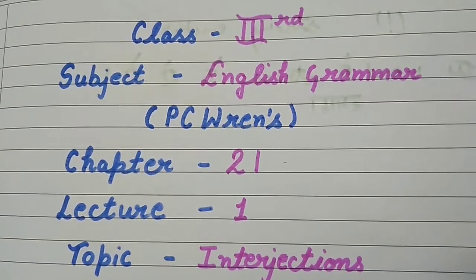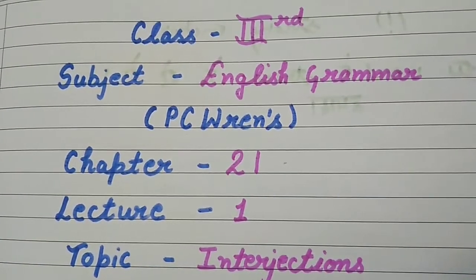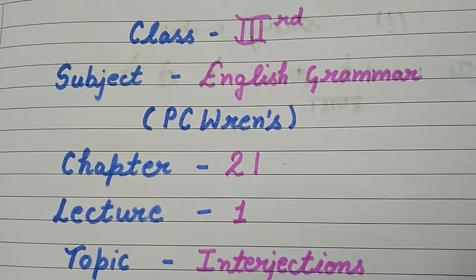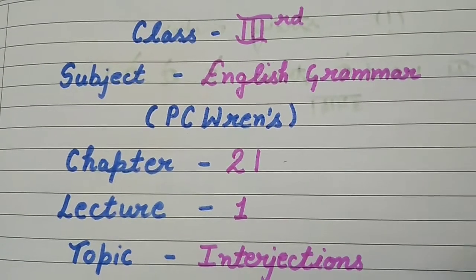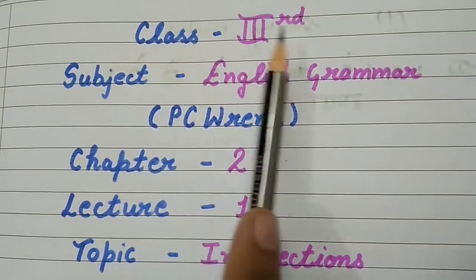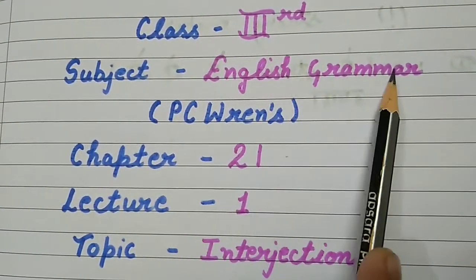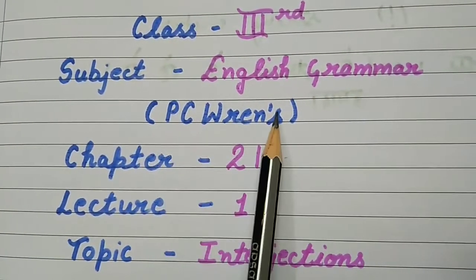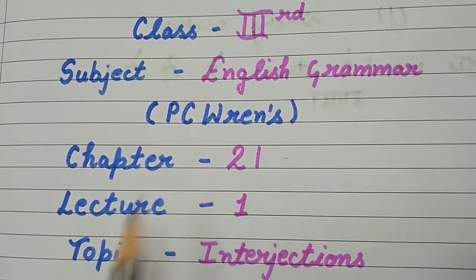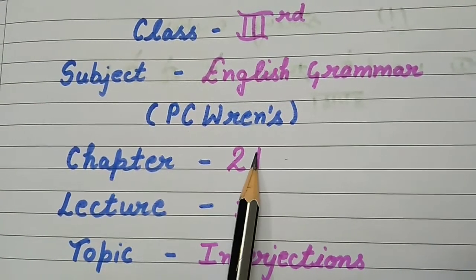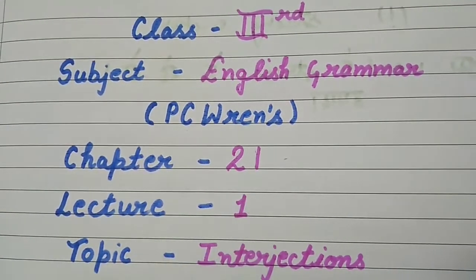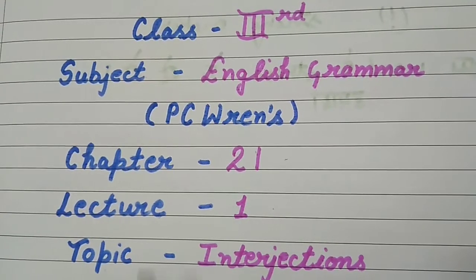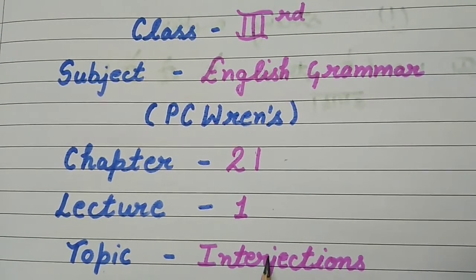Hello students, hope you all are good at your place. So let's start today's class. Today's class is for Class 3rd, subject English Grammar, and the book name is PC Rance. This is Chapter 21 and this is Lecture 1 of 21, and the topic is Interjections.